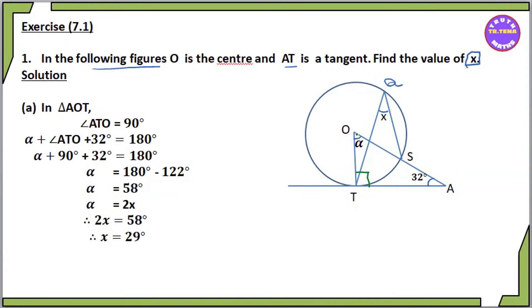So in triangle AOD, angle ATO. If you want to find the radius, the radius is 10, and the other radius is 4.